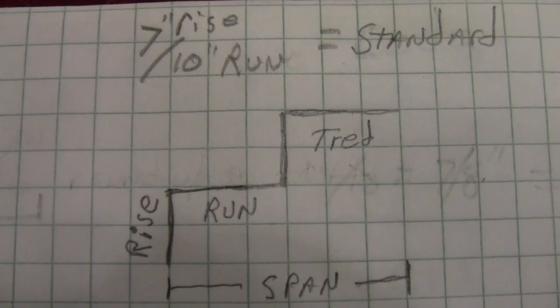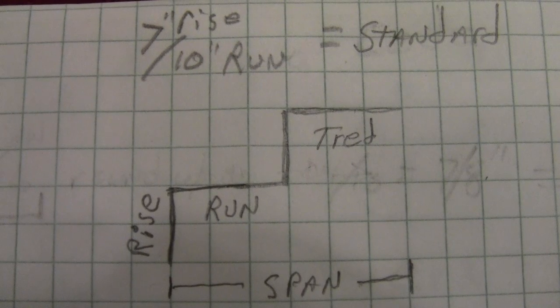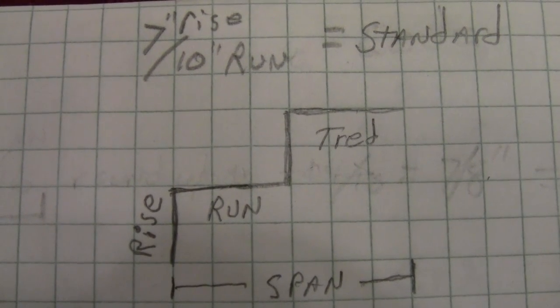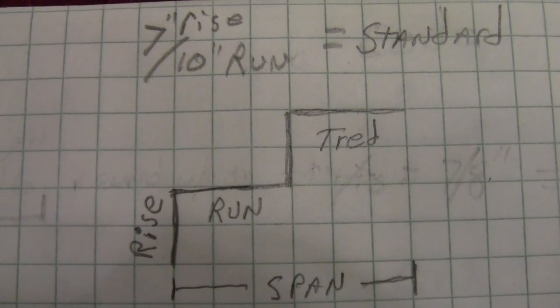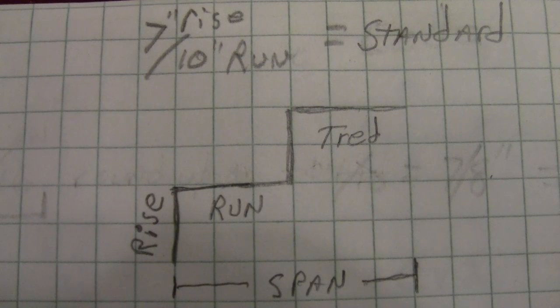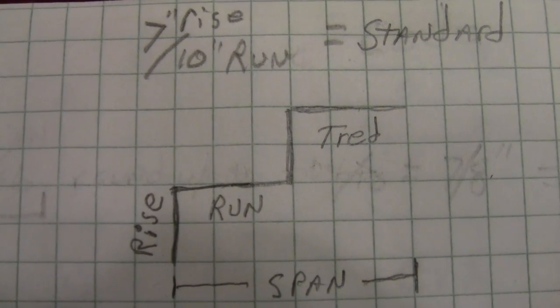Now although the standard is a 7 inch rise, you can go as low as 4 inches and you can go as great as 8 inches. So anything in between there is acceptable.